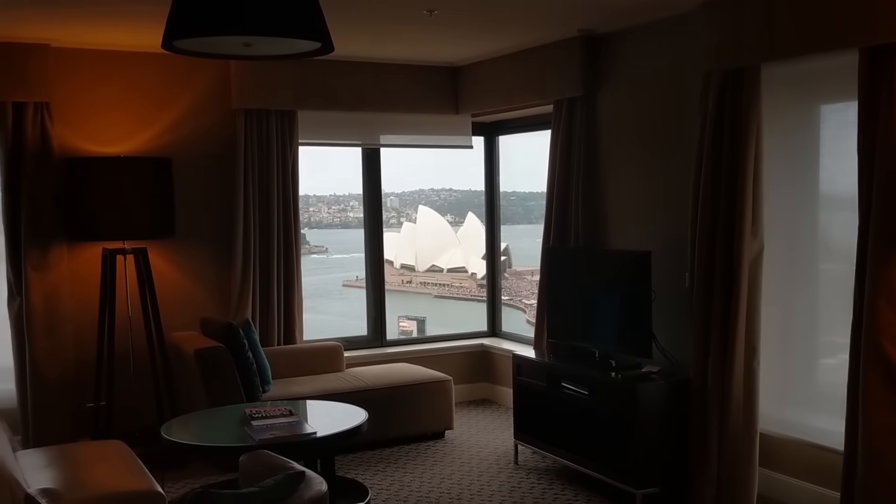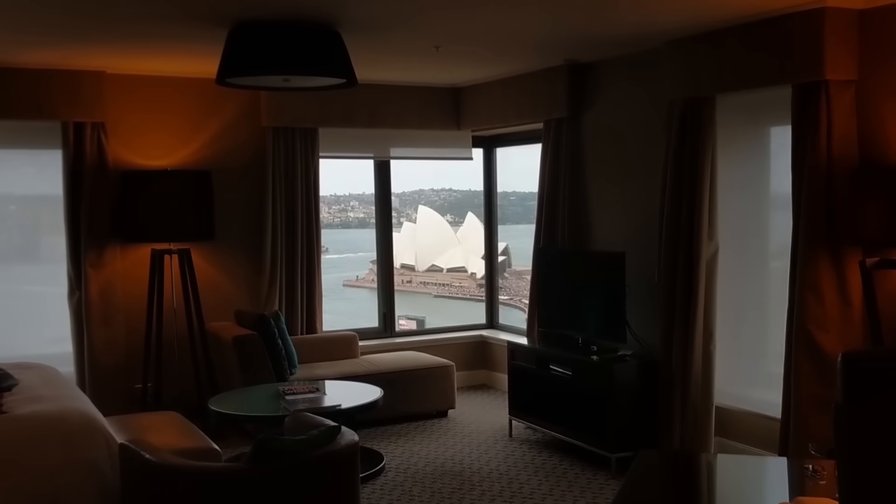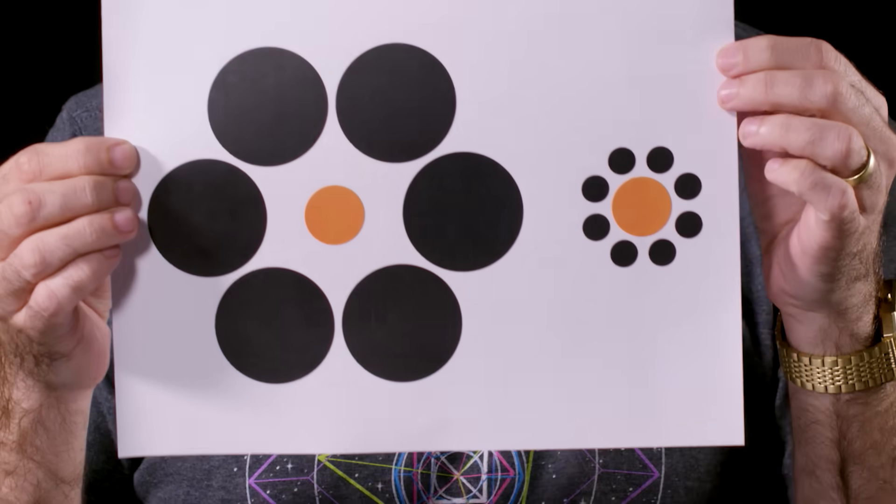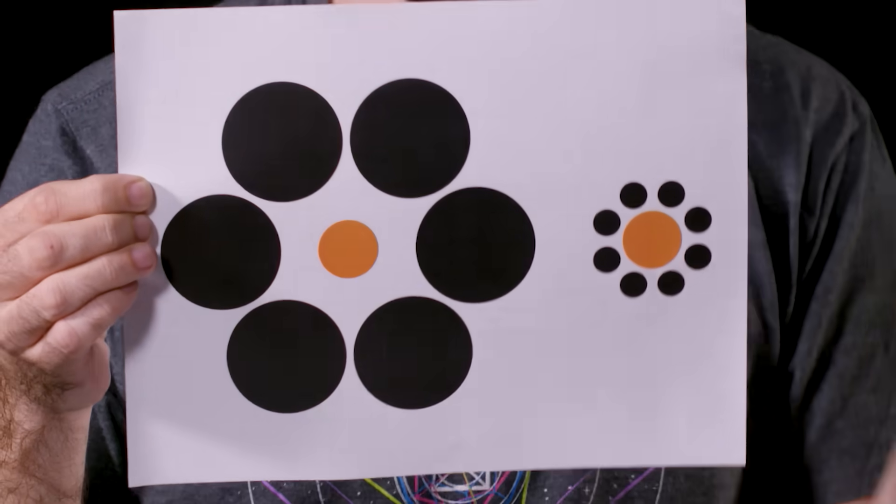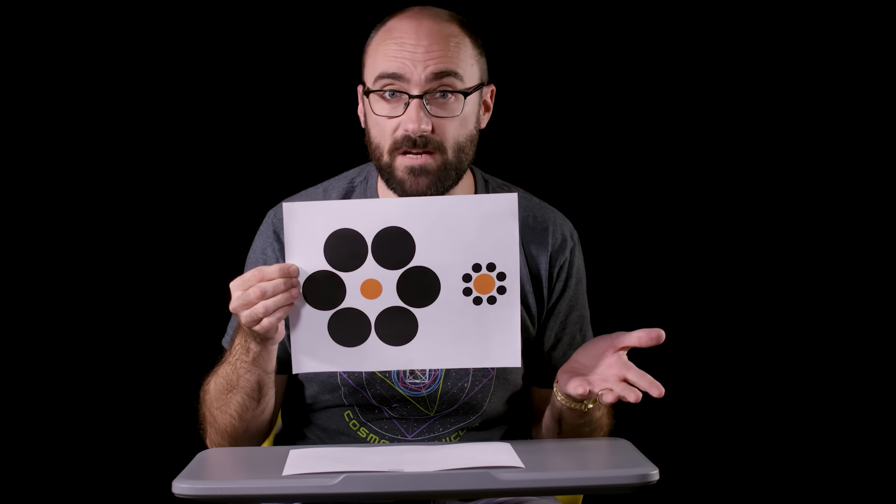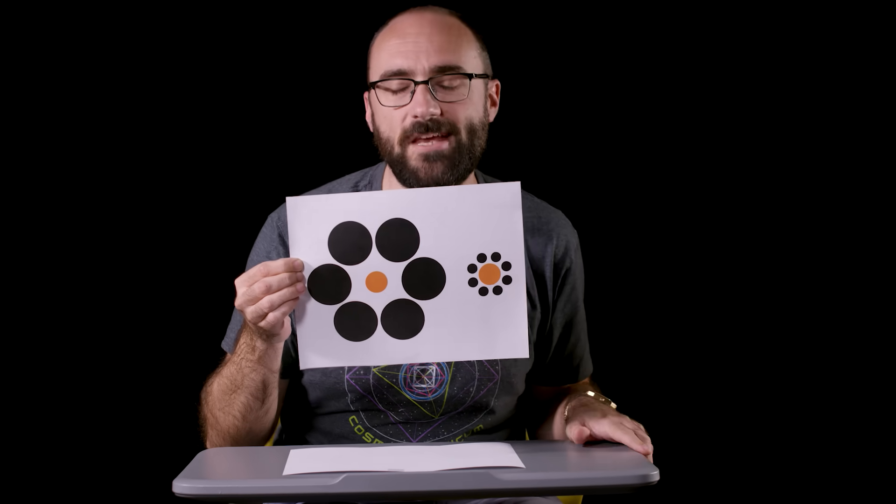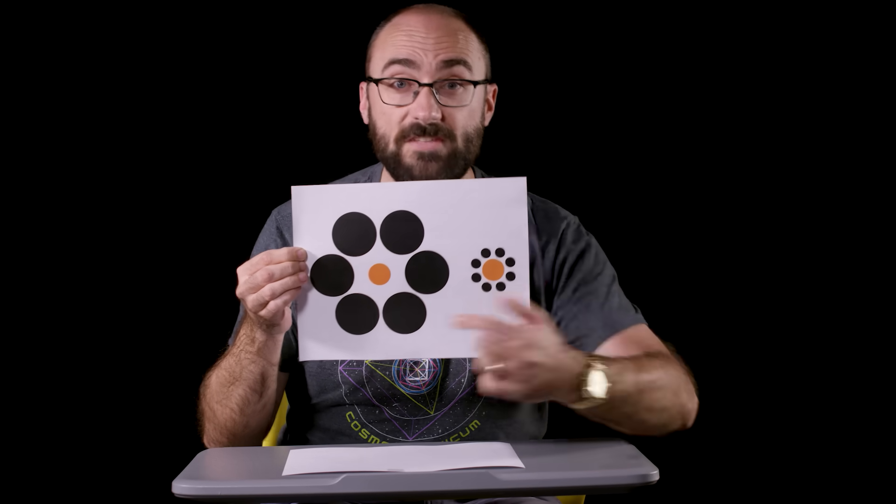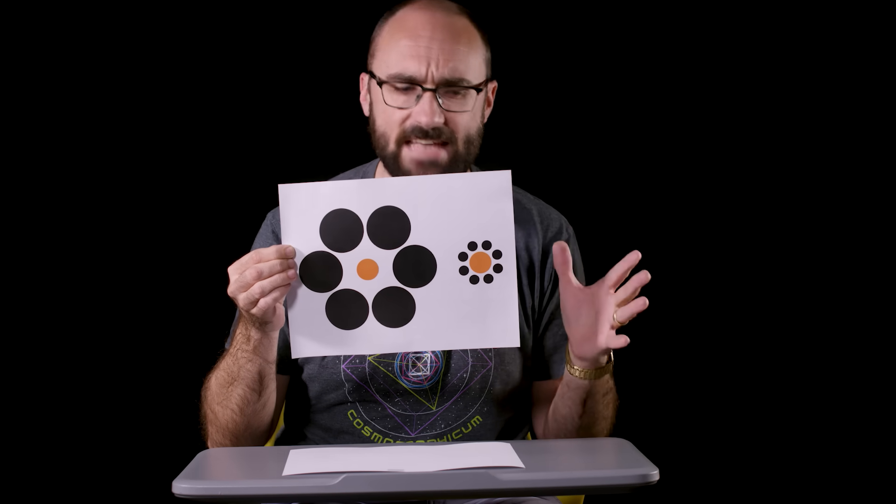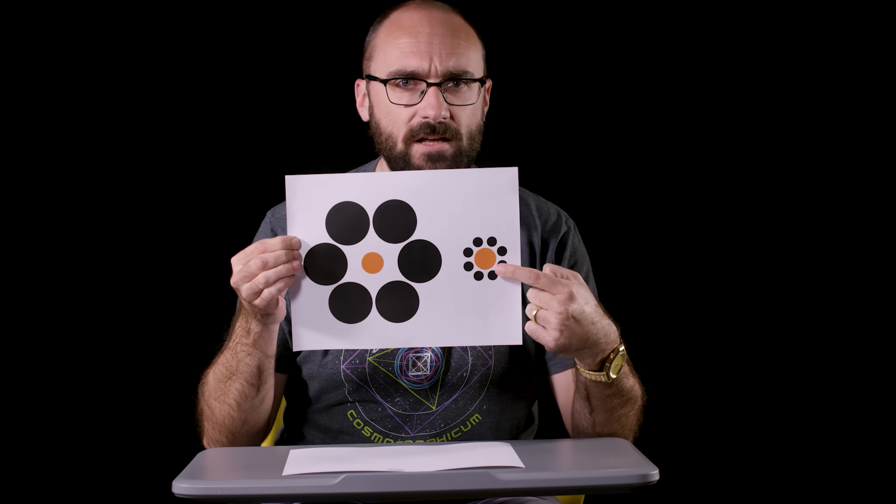This effect reminds me of a couple classic illusions. The first is the Ebbinghaus illusion. We've all seen this one before. We've got two orange circles. Now the question is, which one of these circles looks larger? Since you've probably seen it before, I'm sure you answered they're both the same size, and you would be right. Both of these orange circles are exactly the same size.